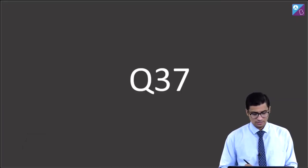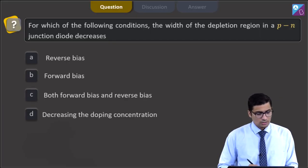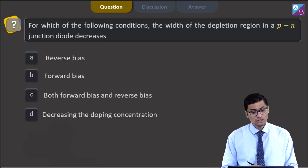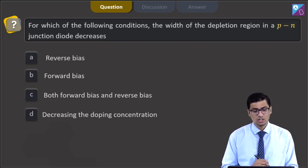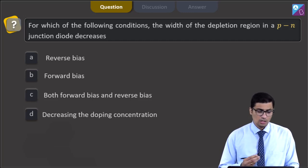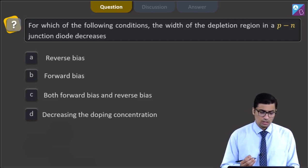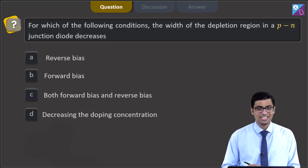This is question 37. The question states: for which of the following conditions does the width of the depletion region in a PN junction diode decrease? Options are: reverse bias, forward bias, both forward bias and reverse bias, or decreasing the doping concentration.